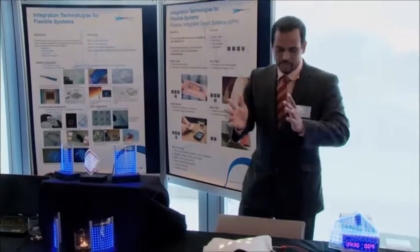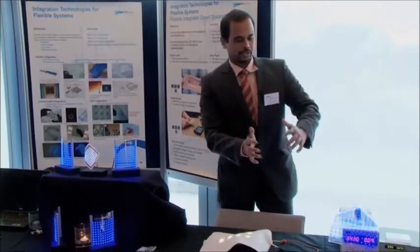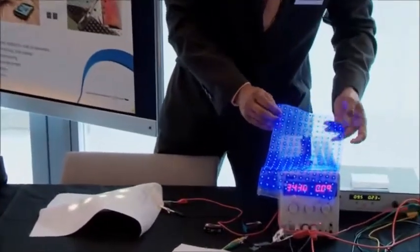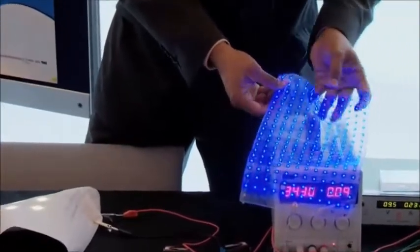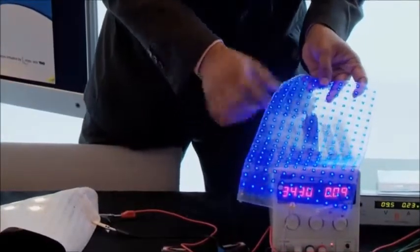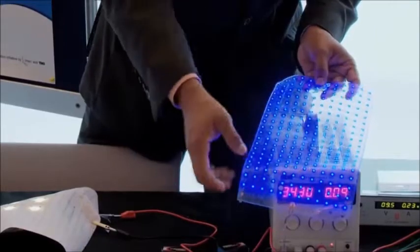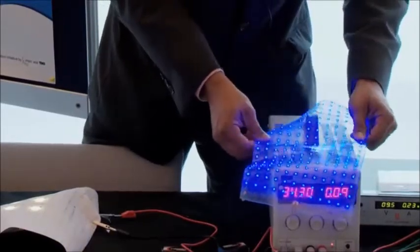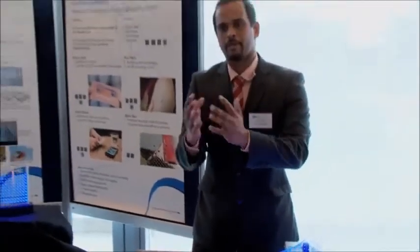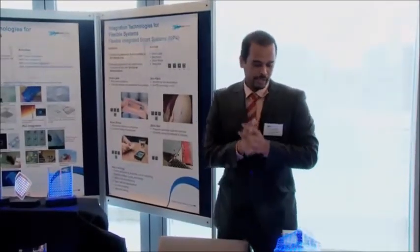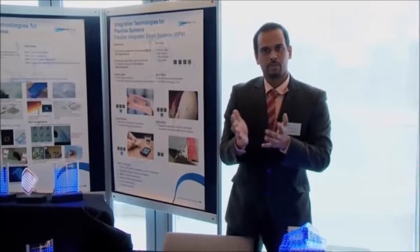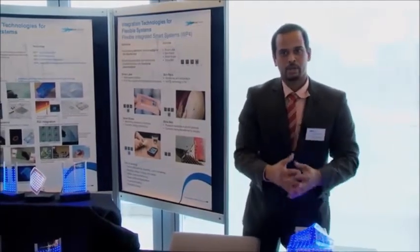Starting with stretchable systems: here is a stretchable organic LED-based lighting which is encapsulated in a rubber matrix. This can be stretched as well as flexed so that it conforms to the shape of whatever object you want to wrap it around. This can be used, for example, as a jaundice blanket for small babies, because blue light has curative properties.